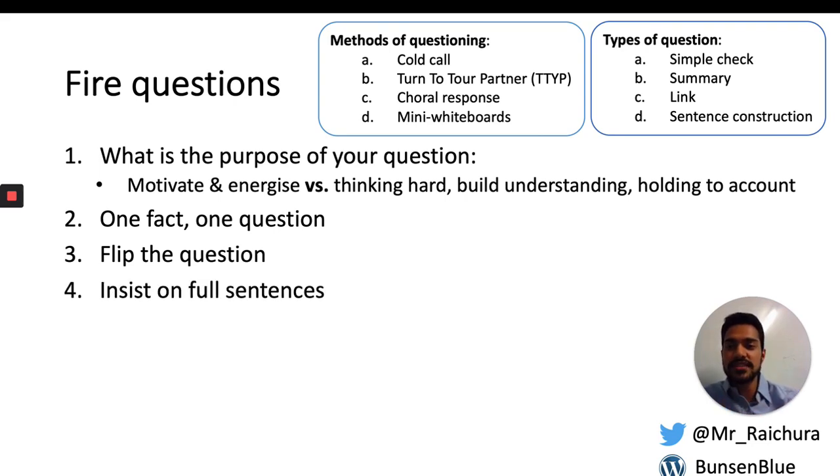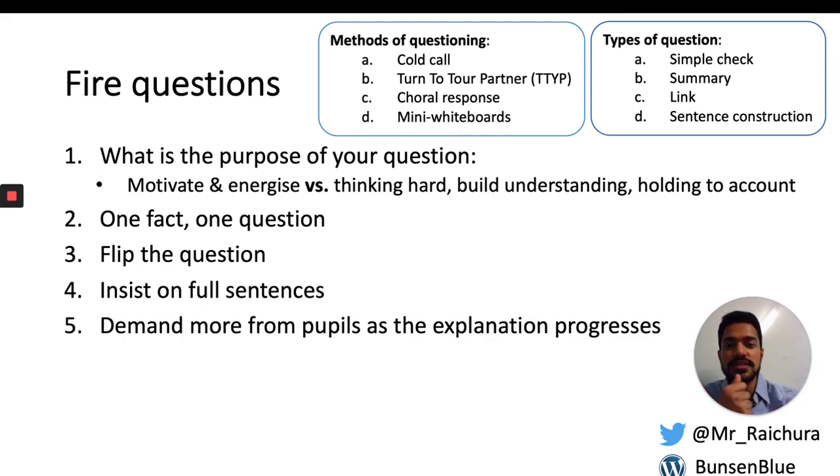Insist on full sentences. If you're saying, what does low density mean? It's not very heavy for its volume. Then you're not expecting a lot from them. Whereas if they say, if a substance has a low density, it means it doesn't have very much mass compared to its volume, then they're really having to think about those two ideas and build those links. So always insist on full sentences.